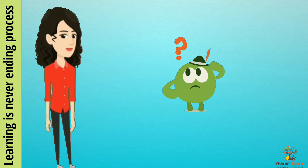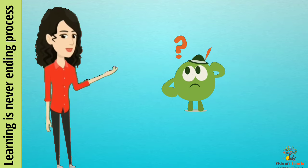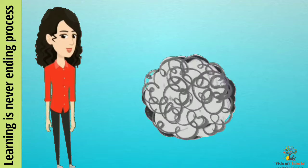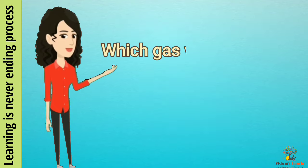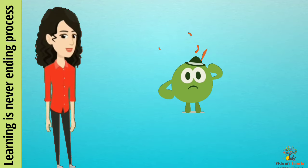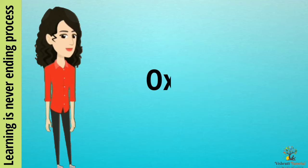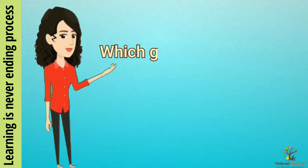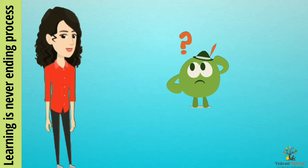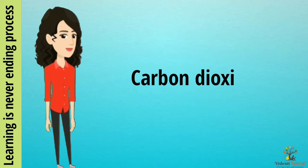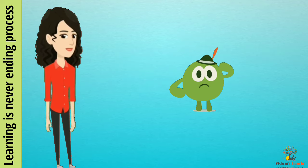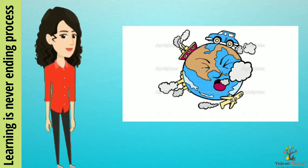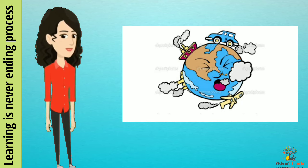Let us revise and answer the questions. What is air? Air is a mixture of many gases and dust particles. Which gas do we breathe in? Oxygen. Which gas do we breathe out? Carbon dioxide. How is the air polluted? Air is polluted through smoke from vehicles and pollution from factories. Very good.